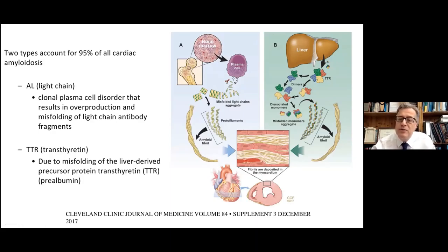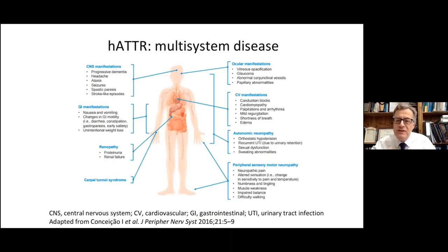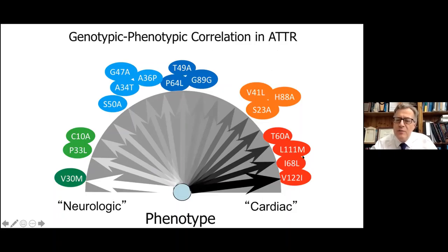TTR is a protein produced predominantly in the liver, and occurs in disease state in the heart in two major forms: a familial form caused by mutations in the TTR gene, and in that familial form we see characteristic multi-organ disease affecting the nervous system, heart, muscle, and kidneys. But we do see particular genotype-phenotype clusters — mutations that manifest almost exclusively with a neurological phenotype, particularly familial amyloid polyneuropathy, others with a predominant cardiac phenotype, and variants with a more mixed phenotype.